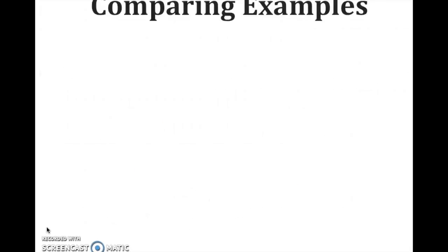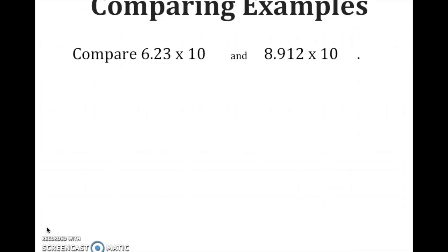Let's take a look at a few examples. We have 6.23 times 10 to the 14th power and 8.912 times 10 to the 12th power. The first thing we need to do is look at the exponents. They are different — we have 14 and 12. Since 14 is greater, 6.23 times 10 to the 14th power is the greater number.